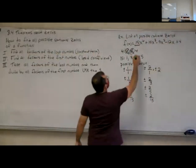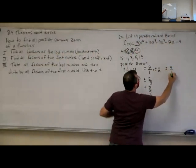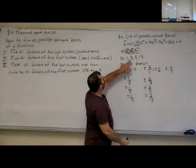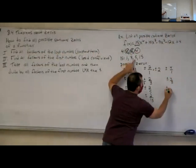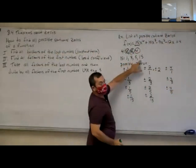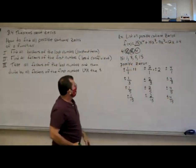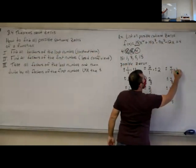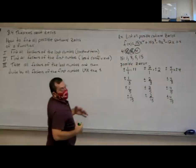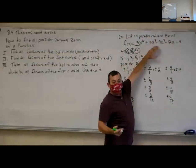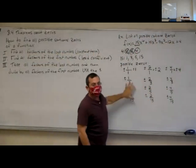And finally, we take the 4 and divide by all four of these numbers. So 4 divided by 1, 4 divided by 3, 4 divided by 5, and 4 divided by 15. The 4 over 1 simplifies to just plus or minus 4. So what that means is, if I was going to find all the zeros out of this polynomial, the rational zeros would have to be one of these.